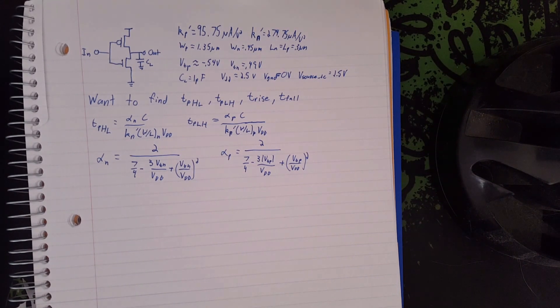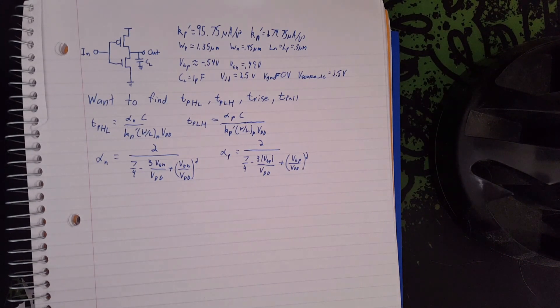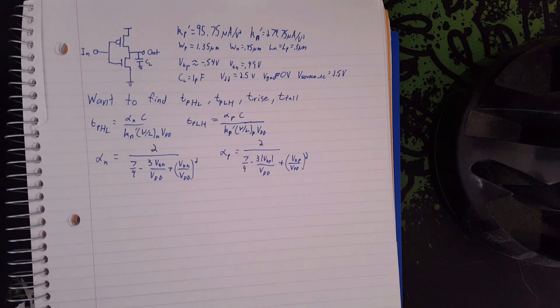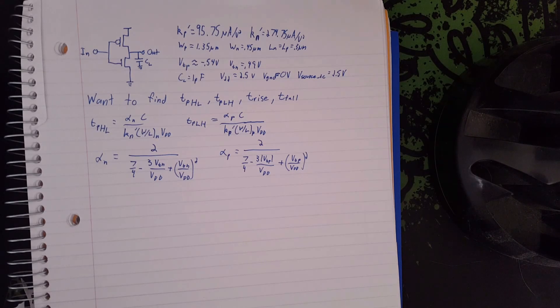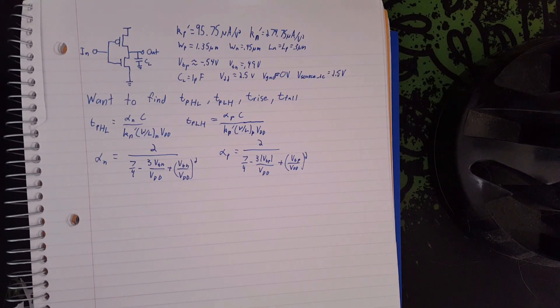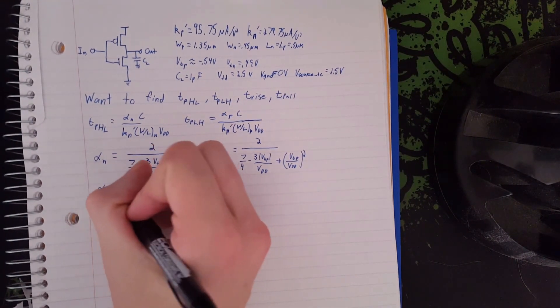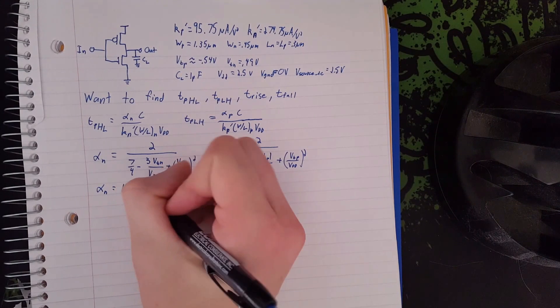So let's find this. Over alpha N, we get 1.67.